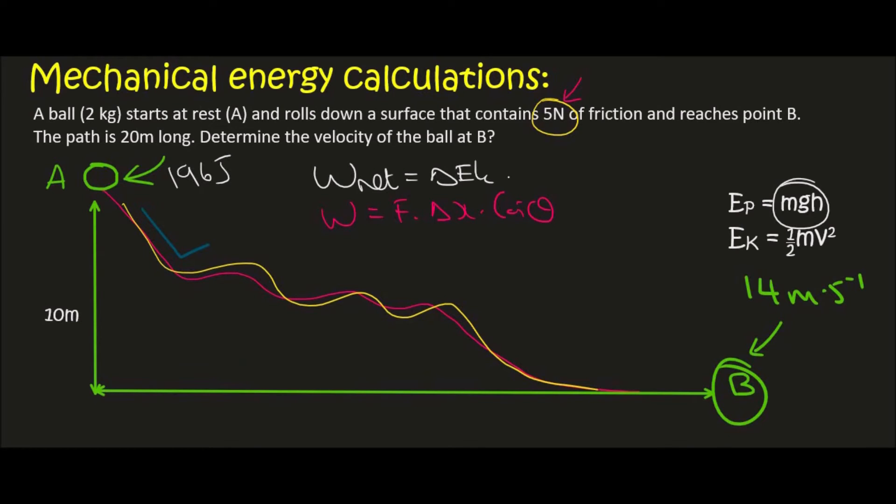Now remember energy is the same as work. And so what we can do is we can take the force of friction which is 5. The distance of the slope they've told us is 20 meters. So we can say 20.